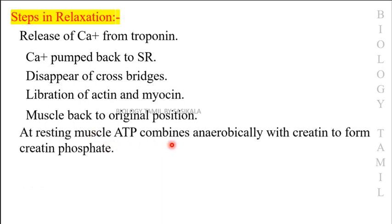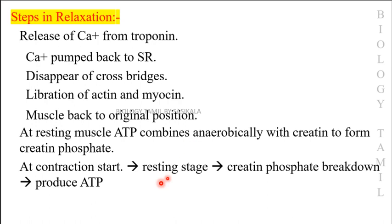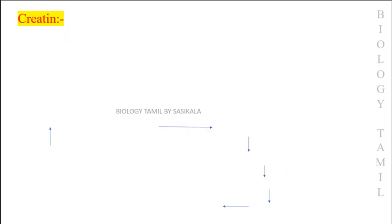At the resting muscle stage, ATP combines anaerobically with creatine to form creatine phosphate. When contraction starts, creatine phosphate breaks down to produce ATP. Creatine then becomes a nitrogenous waste product that is eliminated.